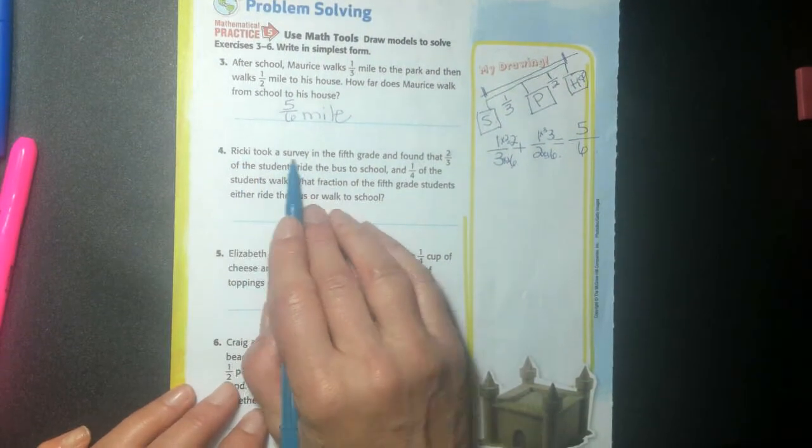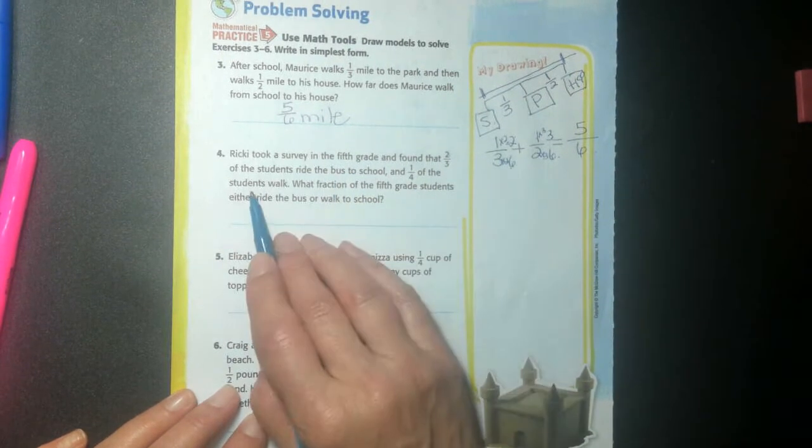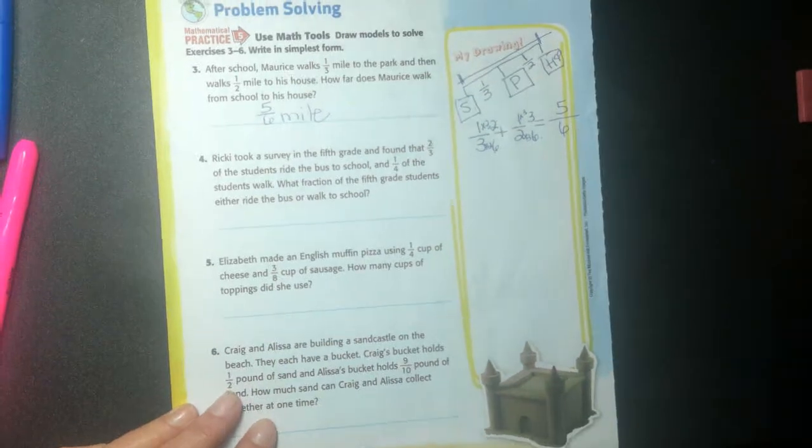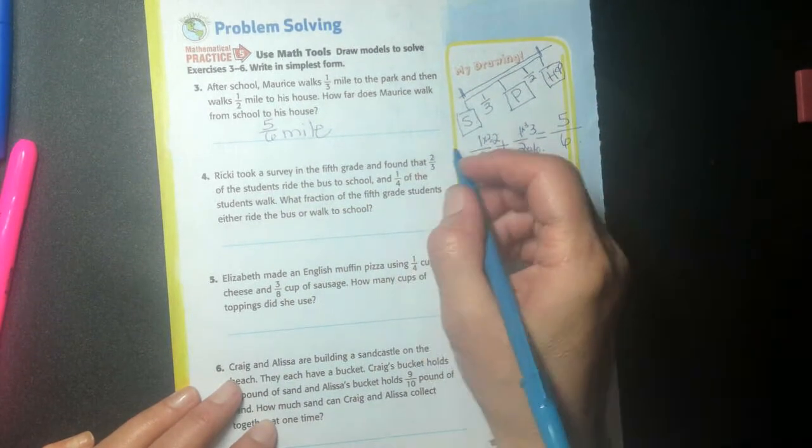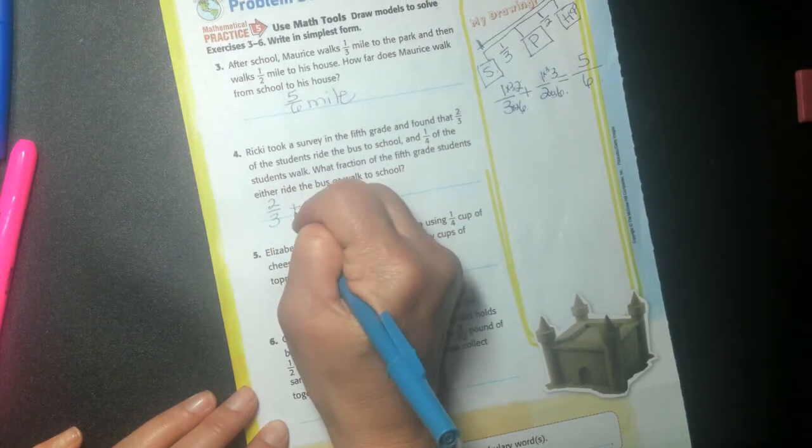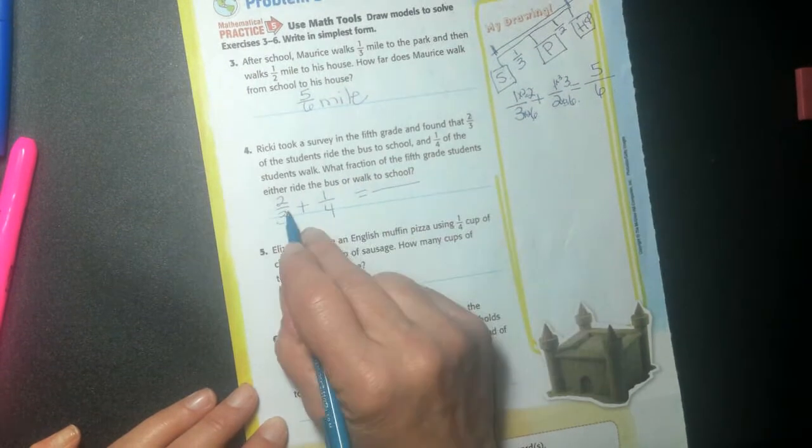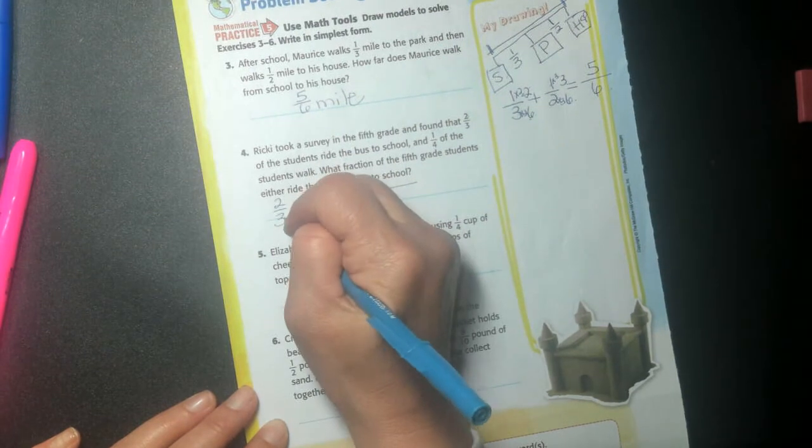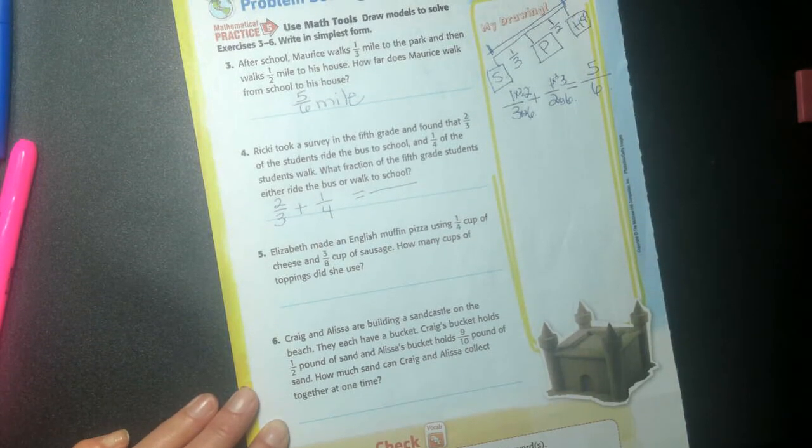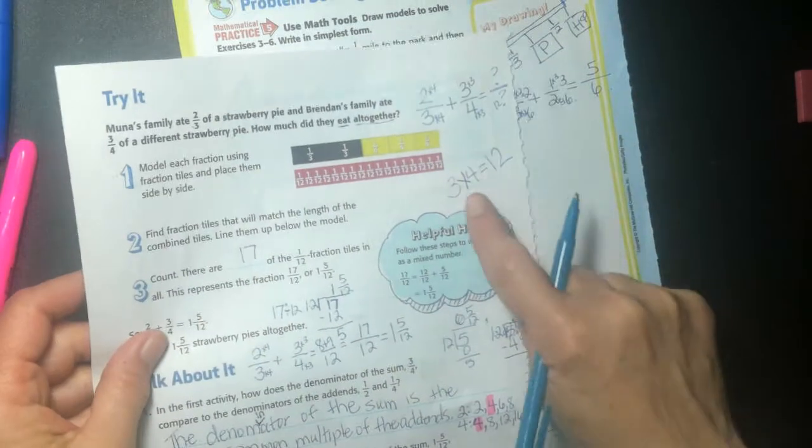Alright. Here's Ricky. He took a survey of the fifth grade and found that two thirds of the students ride the bus to school and one fourth of the students walk. What fraction of the fifth grade students either ride the bus or walk to school? Right? The rest of them get driven by their parents or something. So we're going to do, I'm going to just do it right here. Two thirds plus one fourth equals. Now I'm realizing I got to leave a lot of room here. So I'm going to turn this into a three and four, right? We've done that a bunch of times. So hopefully you guys remember when I do the three and the four, my common denominator is going to be a 12.